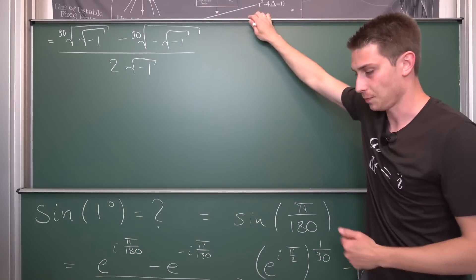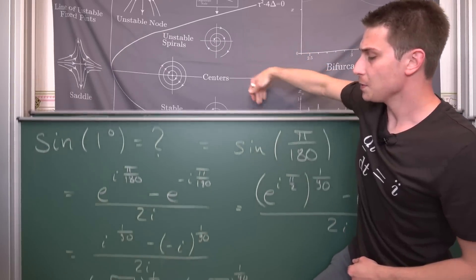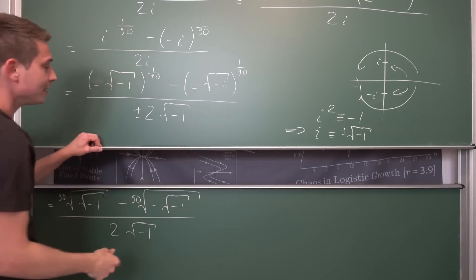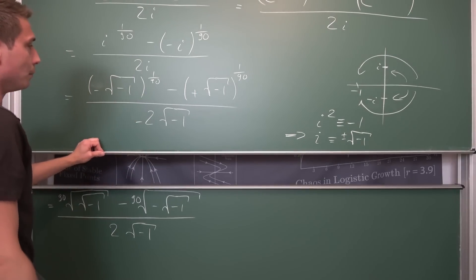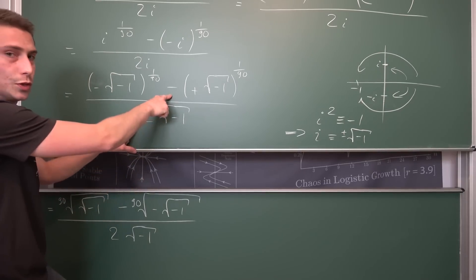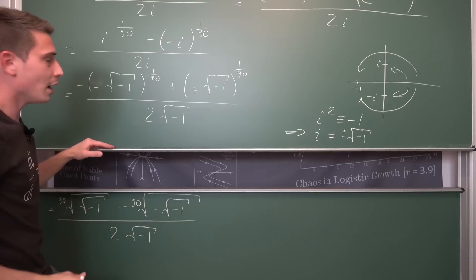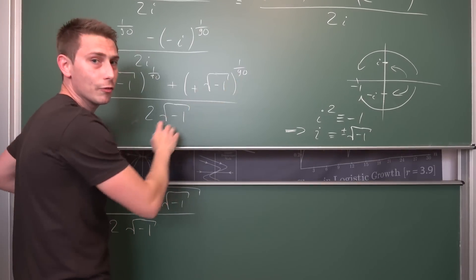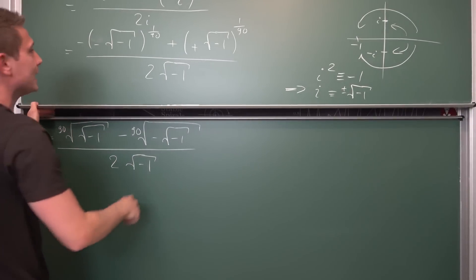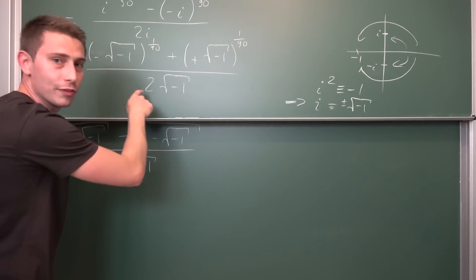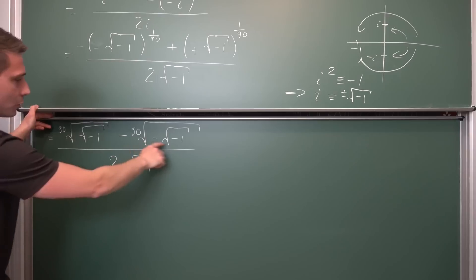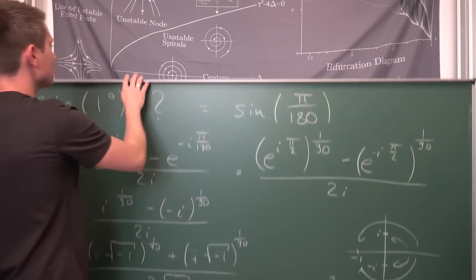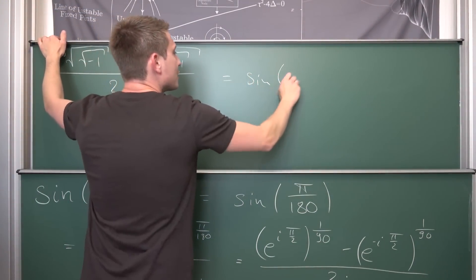This is the first solution. Now let us take a look at the second branch — the negative branch. We get a negative sign in front, which we can distribute into the numerator, and this gives us exactly the same expression: the square root of negative 1 to the 1 over 90th, minus negative the square root of negative 1 to the 1 over 90th, over 2 times the square root of negative 1. This yields the same solution at the end, and this right here is our solution for the sine of 1 degree.